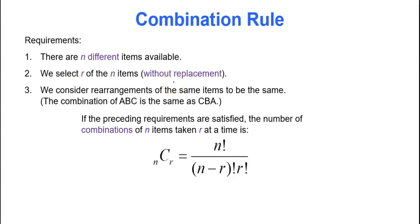A combination is almost like a permutation except there's one major difference. So with the requirements, they're still N different items available. You still select R, or some of the N items, without replacement. And rearrangements of the same items tend to be the same thing. So the combination of ABC is the same as CBA. So maybe you're picking a three person committee to make decisions about something in an organization. Well, Alan, Betty, and Charles being picked for the committee is the same as Charles, Betty, and Alan being picked for the committee. The order which they were picked does not matter. What matters is that they're serving on the committee.